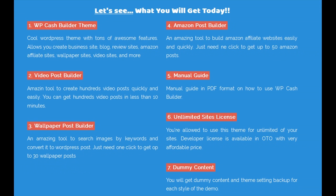WP Cash Builder also comes with these cool features: 15 homepage layouts, 100% responsive, multipurpose, unlimited color, theme panel, fast loading, SEO friendly, 600-plus Google fonts, shortcode, flexible layout grid, page builder, logo uploader, cool slider, unlimited backgrounds, 9 Amazon countries, auto video thumbnail, auto play video, auto embed video, auto image and video description, and much much more.